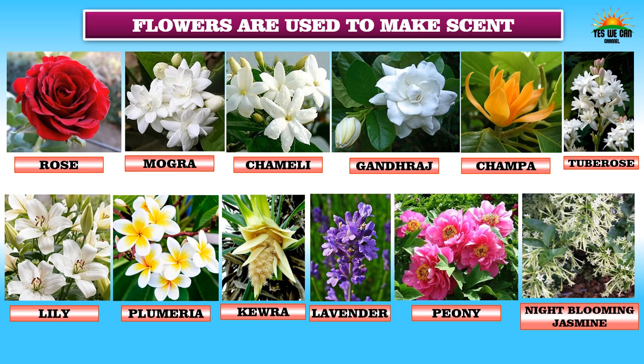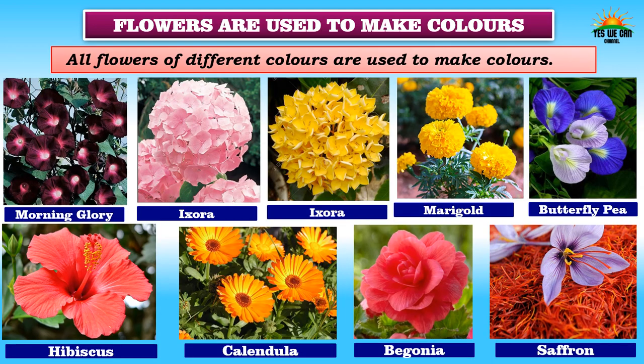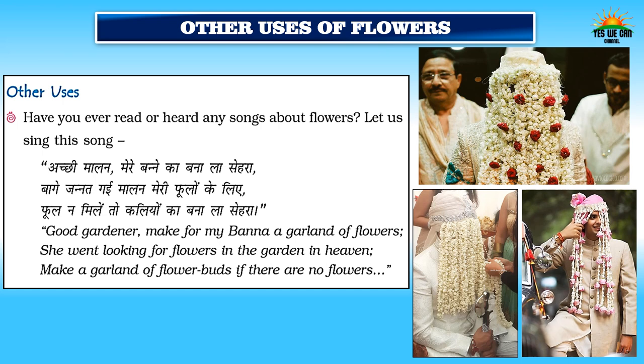Many flowers are used to make scent, like rose, mogra, chameli, gandharaj, champa, tube rose, lily, plumeria, keoda, lavender, peony, and night-blossoming jasmine. Colors are also made from many flowers and can be used to dye clothes. Some flowers used to make colors are morning glory, ixora, marigold, butterfly pea, hibiscus, calendula, begonia, and saffron.